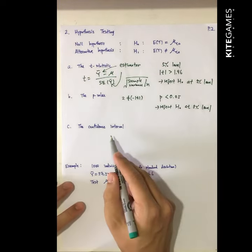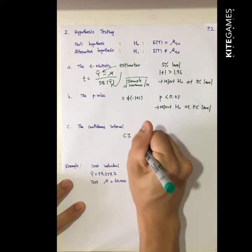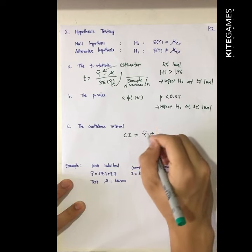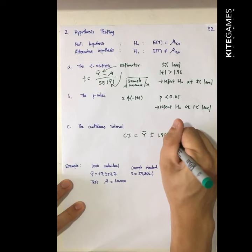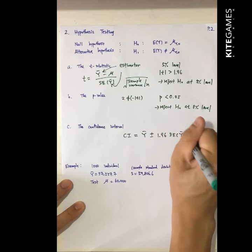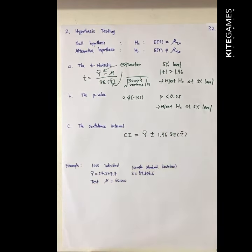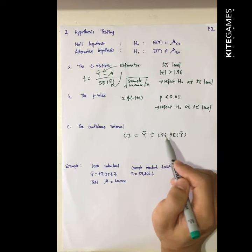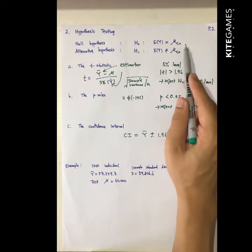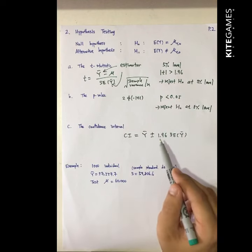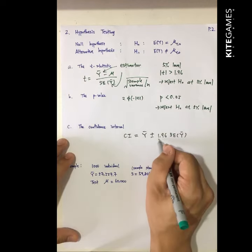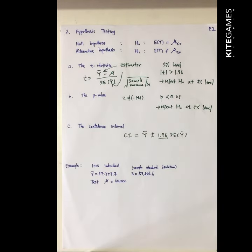Finally, there is the confidence interval, defined as the estimator plus or minus 1.96 times the standard error of Y-bar. If you calculate the confidence interval and your stated value lies outside this interval, again you can reject the null hypothesis. This 1.96 is derived from the 5% significance level.